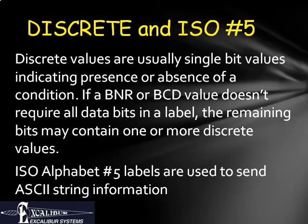Discrete values are not numbers, but rather a set of values. A single-bit discrete may be interpreted as true or false. A two-bit discrete, which can encode four values, may be interpreted as off, low, medium, or high. Discretes are often transmitted together with BCD or BNR labels in which the BCD or BNR value does not require all the available data bits. ISO Alphabet Number 5, or ASCII coding, is used to send text.